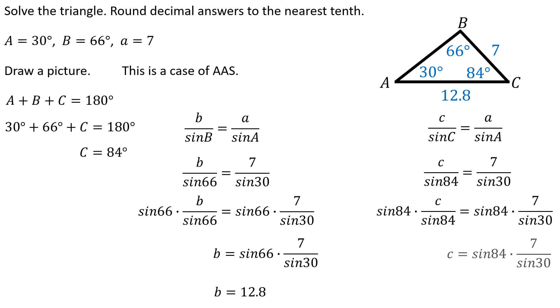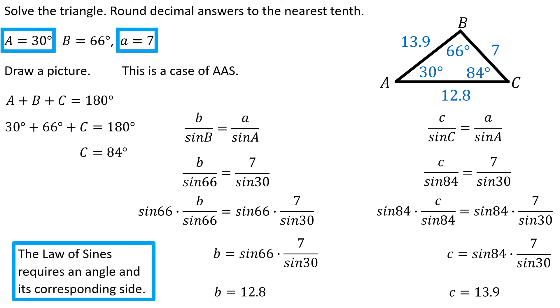And then on the other one, let's solve for the length of side C. Again, if I can push the buttons in the correct order, I should come up with about 13.9. So if you need to practice using a calculator, just make sure you can do this one. Say, hey, can I do sine of 84 times 7 divided by sine of 30 and get 13.9? Right? Test yourself. Or try, hey, sine of 66 degrees times 7 divided by sine of 30 degrees. Make sure you can really get 12.8 on your calculator.